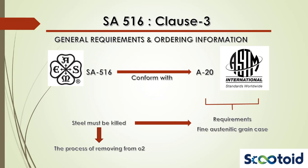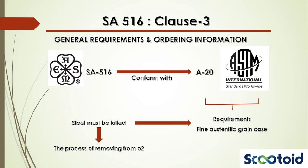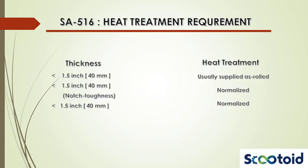The clause 'Materials and Manufacture' covers the steelmaking practice. It includes a very important point that the plate manufactured under the SA 516 specification needs to be killed and should conform to the fine austenitic grain size requirement of the specification A20 from the ASTM. In steelmaking, killing refers to the procedure where free oxygen is removed from the material.